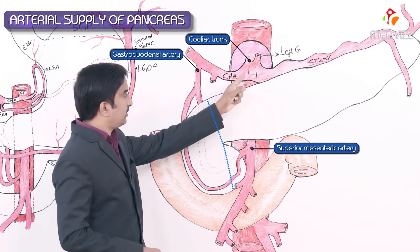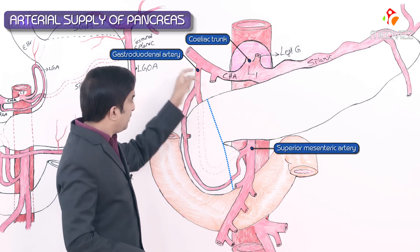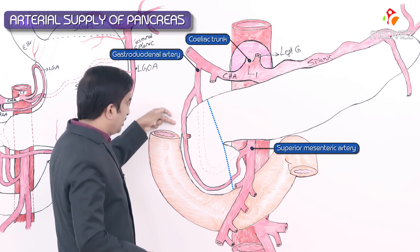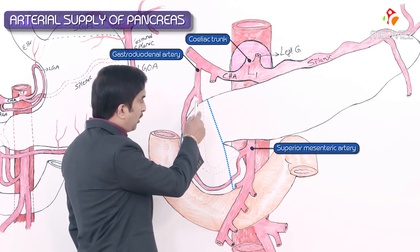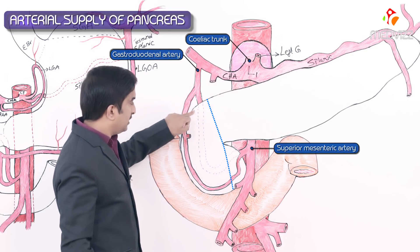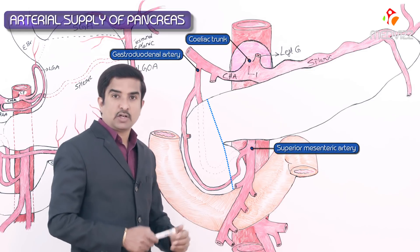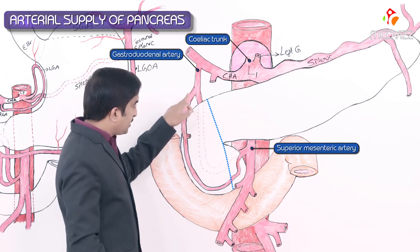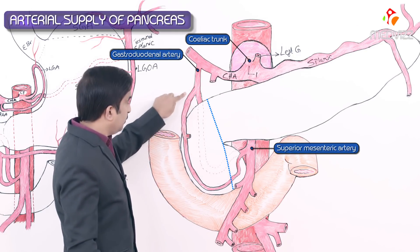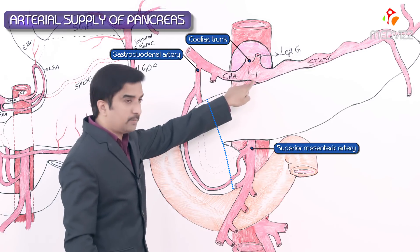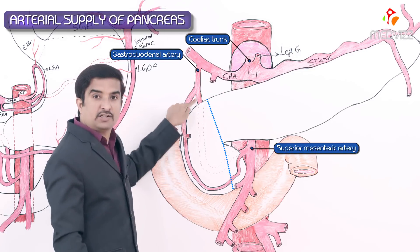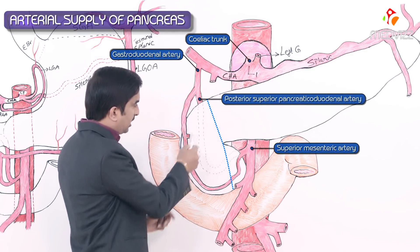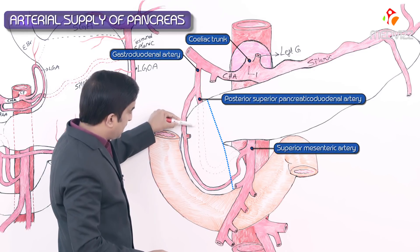The celiac trunk gives off the common hepatic artery, which gives off the gastroduodenal artery. The gastroduodenal artery runs on the dorsal aspect of the pancreas and gives off its first branch — the posterior superior pancreaticoduodenal artery.